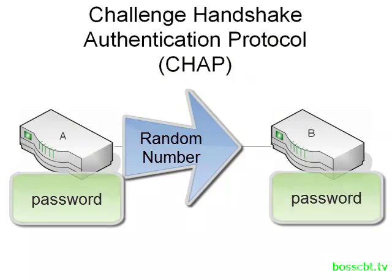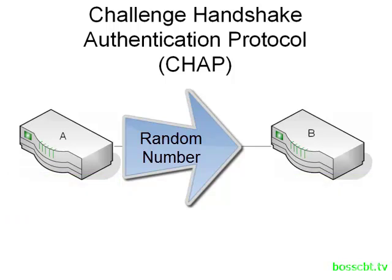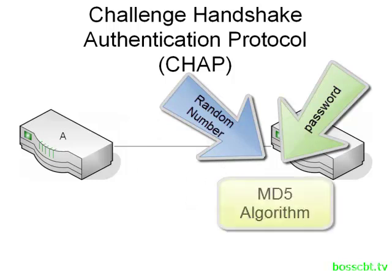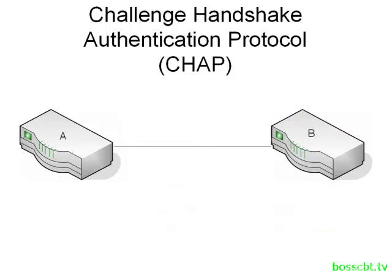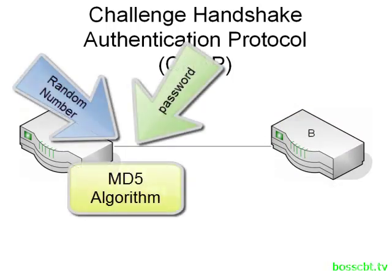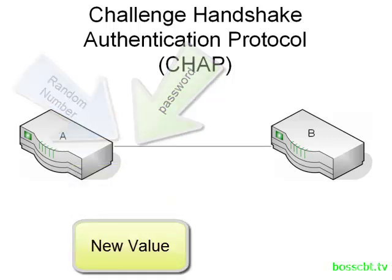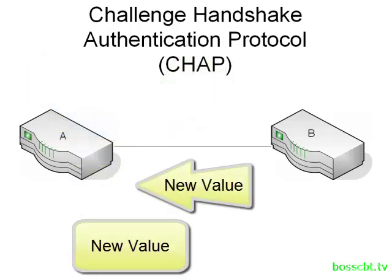That password is never sent across the link — it's only locally configured. When router B receives that random value, it takes that number along with the secret password configured on it and puts both into the MD5 hash algorithm. It comes up with a new value and sends it back to router A. Router A then takes the original value it sent, along with its locally configured password, and puts those into the same MD5 hash algorithm to get its own result. It then compares the two results — the value it calculated and the value that router B calculated.